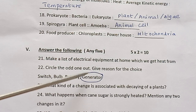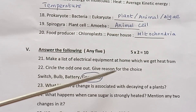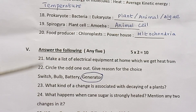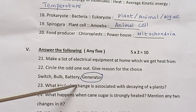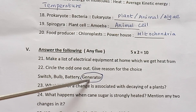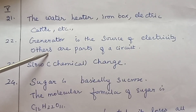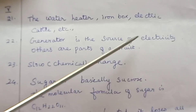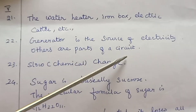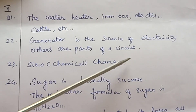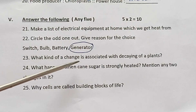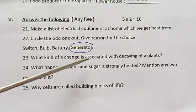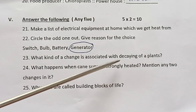Question 22: Circle the odd one out and give a reason. Options: Switch, Bulb, Battery, Generator. Answer: Generator is the source of electricity; the others are parts of a circuit.